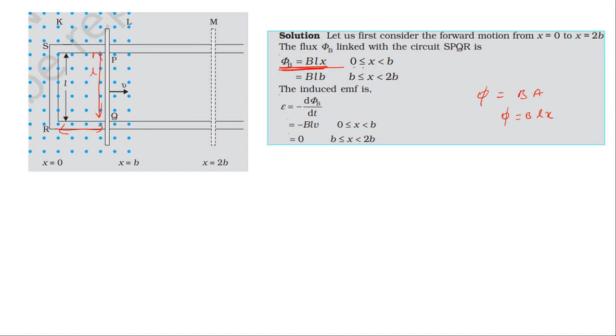From zero to b, the flux increases as three sides of the loop are in the field. From b to 2b, the flux is constant at LB. For x value in the region 0 to b, the flux equals B times L times x. The induced EMF equals minus d(phi)/dt.